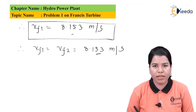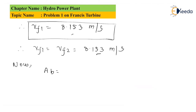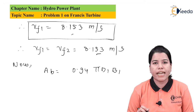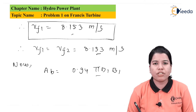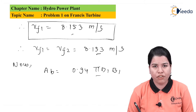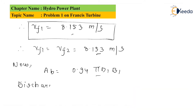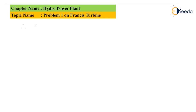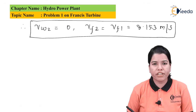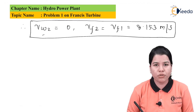The area formula AB is equal to 0.94 × π × D1 × B1. Since the discharge at the outlet is radial, we can write that Vw2 = 0, and Vf2 = Vf1 = 8.153 m/s.